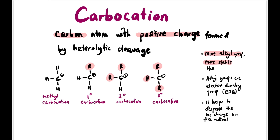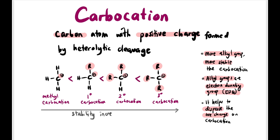Alkyl groups are electron-donating groups (EDG). They donate electrons toward the C+, helping to disperse the positive charge on the carbocation. So the more alkyl groups, the more stable the carbocation.